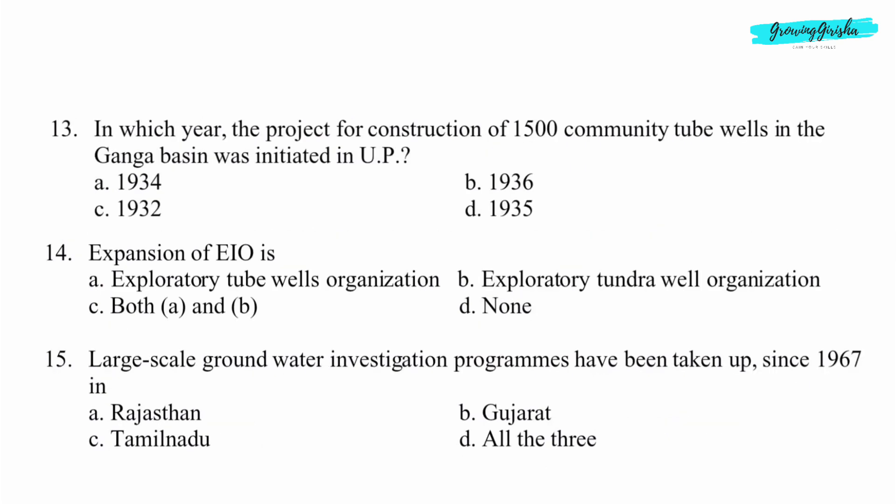Question 13. In which year was the project for construction of 1500 community tube wells in the Ganga basin initiated in UP? Option A: 1934.